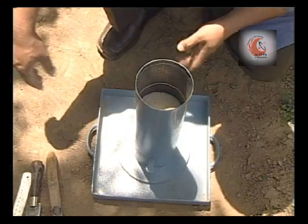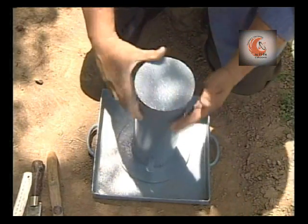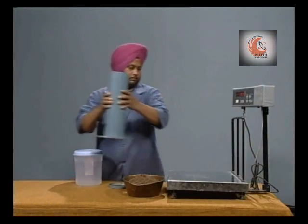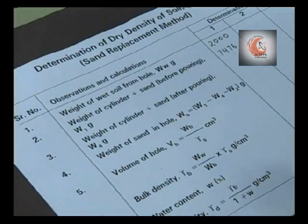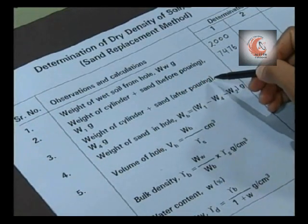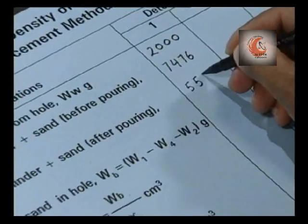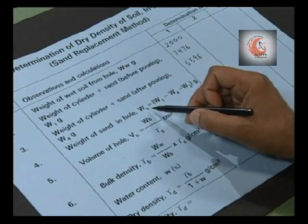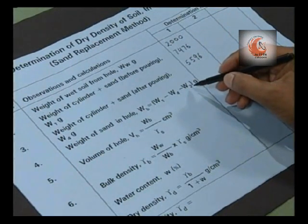Now close the shutter. Remove the cylinder from the excavated hole. Weigh the pouring cylinder with the remaining sand. Record the weight of cylinder with sand after pouring in the hole, that is W4. Weight of sand in the hole, that is WB, is the difference of W1 minus W4 minus W3, which is the weight of sand in the cone of the calibrating cylinder.